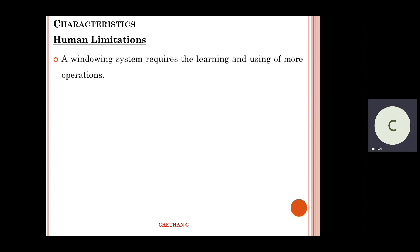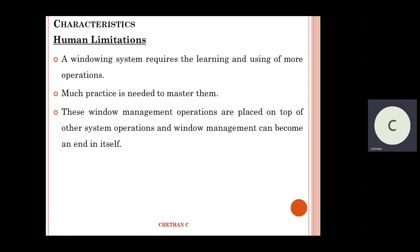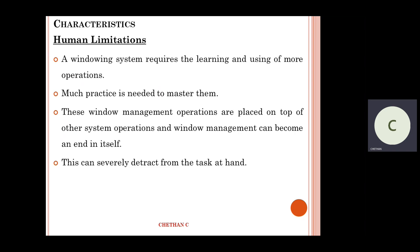Human limitations: a windowing system requires learning and using more operations, and much practice is needed to master them. Window management operations are placed on top of other operations, and window management can become an end in itself. Think of a person who is not able to work on windows — that illustrates human limitations. These are the characteristics: predominantly advantages and disadvantages.